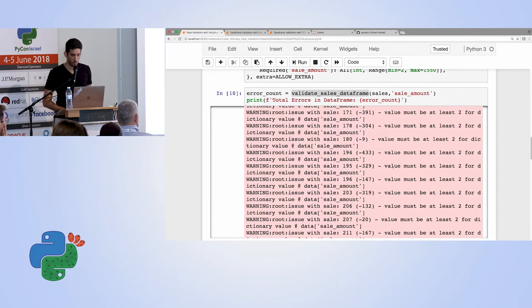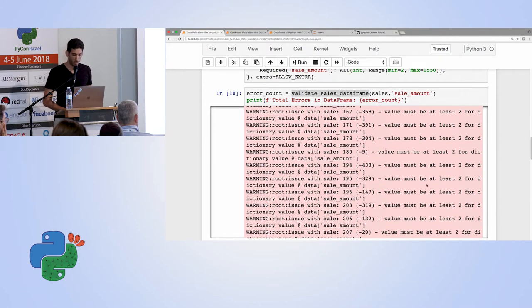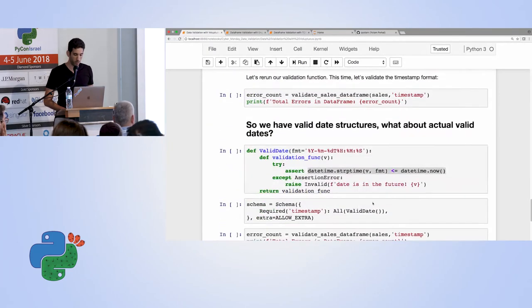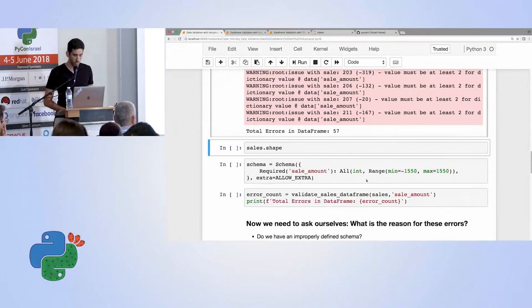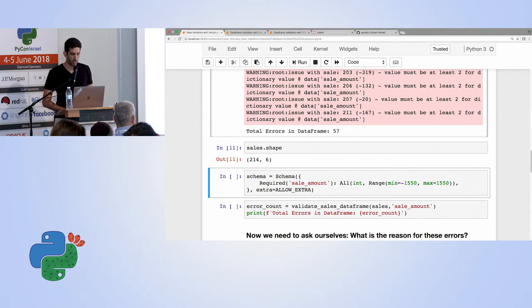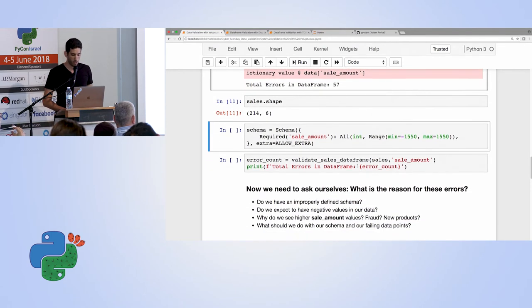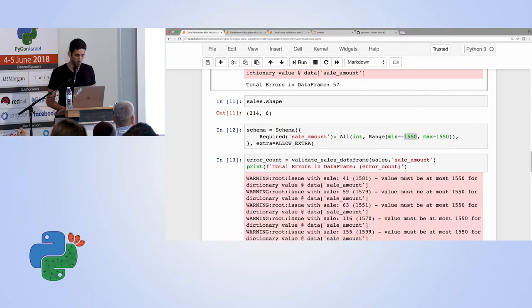And rerun our validation. Okay. And now we see we have different error reports. So the value must be at least 2. And we see that we have a lot of negative values. We also got an indication of the total amount of errors in the data frame. Out of 214 samples, 57 are wrong. So let's update our schema.